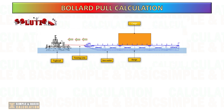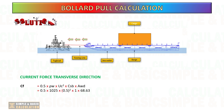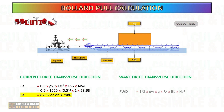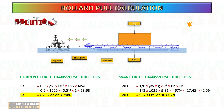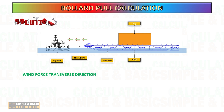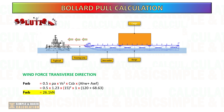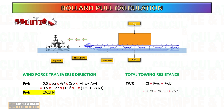Now, after gathering all the data, calculate the current force and wave drift force in the transverse direction. Take note of the formulas and use your calculator to follow the computation. Next, calculate the wind force in the transverse direction. Once you have all these forces acting on the barge and cargo, add them together to get the total towing resistance.